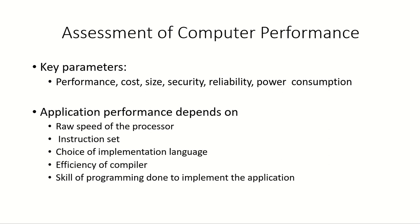When we are trying to assess the performance of a system, the key parameters are the performance of the processor, the cost, size, security, reliability, and power consumption. The performance of an application that will run on the system depends upon the raw speed of the processor, the instruction set architecture being used, the choice of implementation language, the efficiency of the compiler, and the skill of programming used to implement the application.